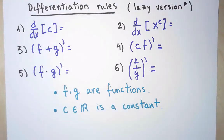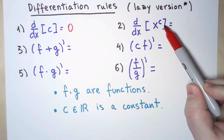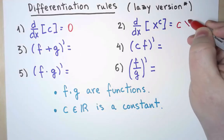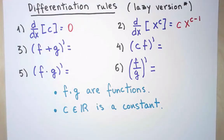The derivative of a constant is 0. The derivative of a power, x to the c where c is a constant, is c times x to the c minus 1. And this works for all real numbers c.